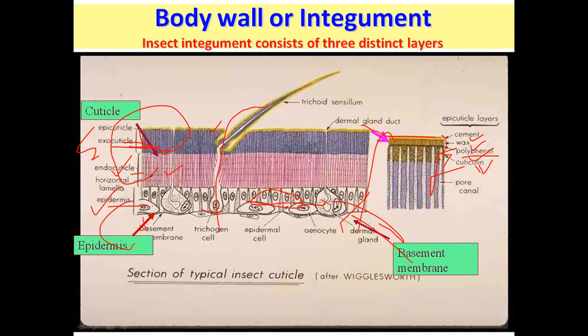The basement membrane is the basal part of the insect body wall, formed by various degenerated epidermal cells. It appears as a non-living, amorphous (shapeless) form — a granular layer of the integument approximately 0.5 microns in thickness. It is present beneath the epidermis as a continuous sheet, and the sarcolemma of muscles is also associated with the basement membrane.